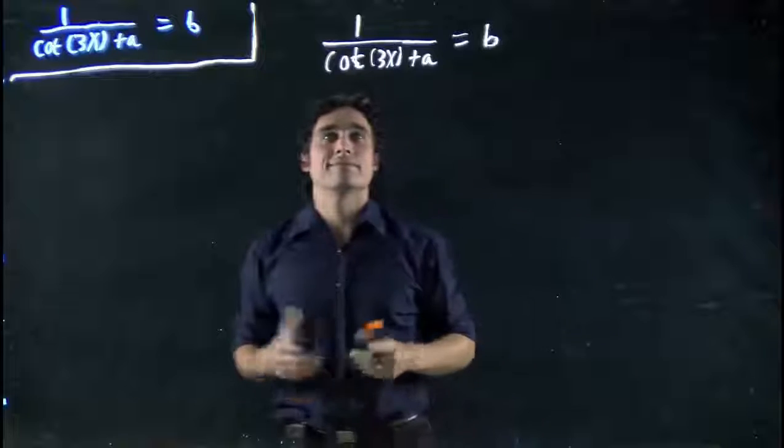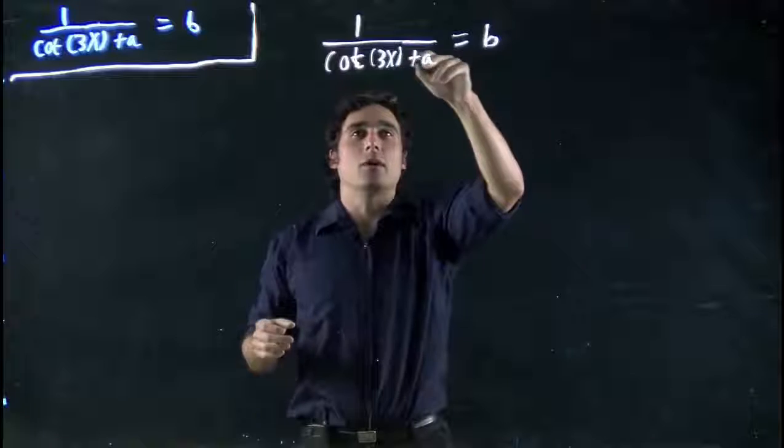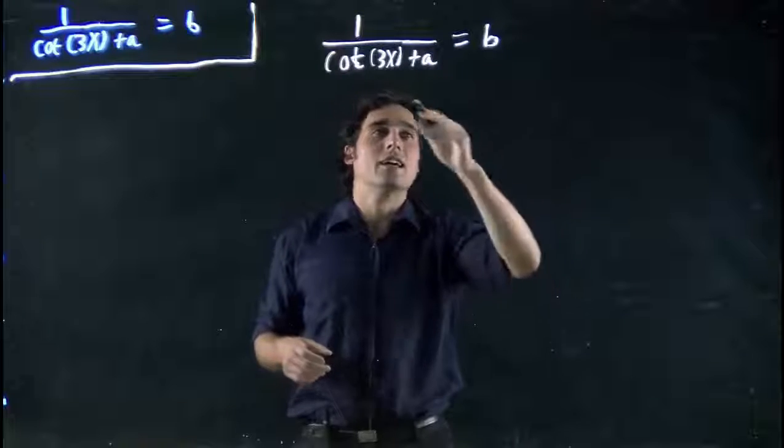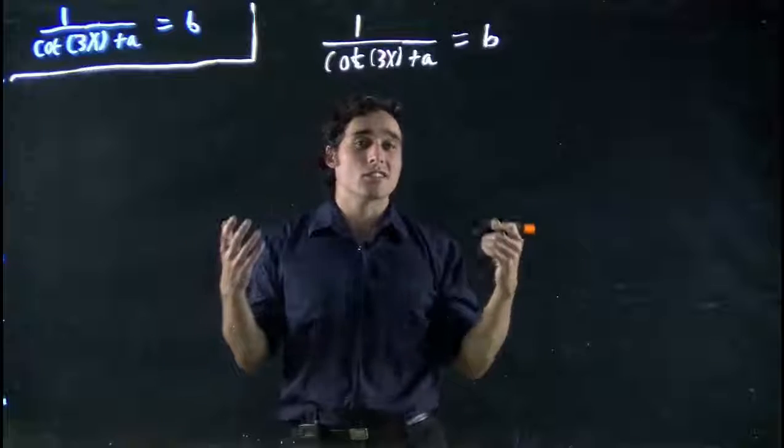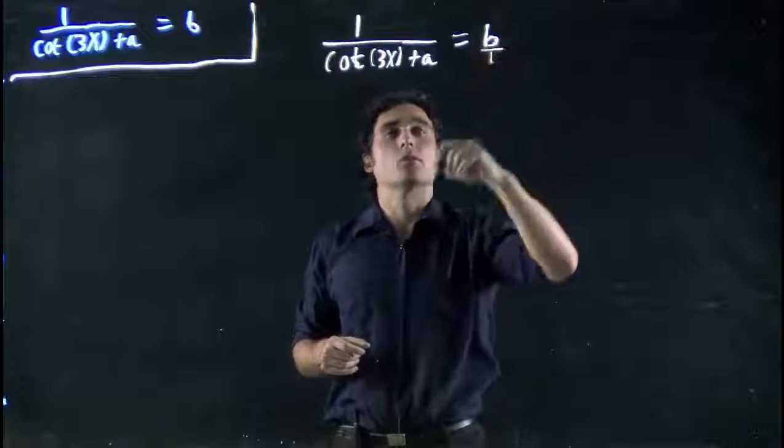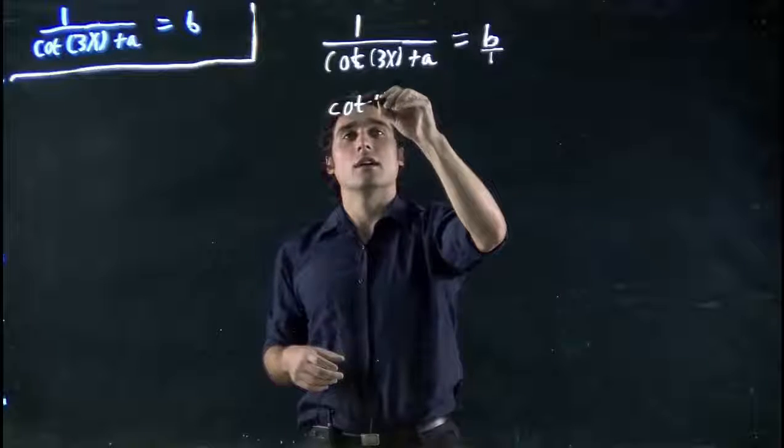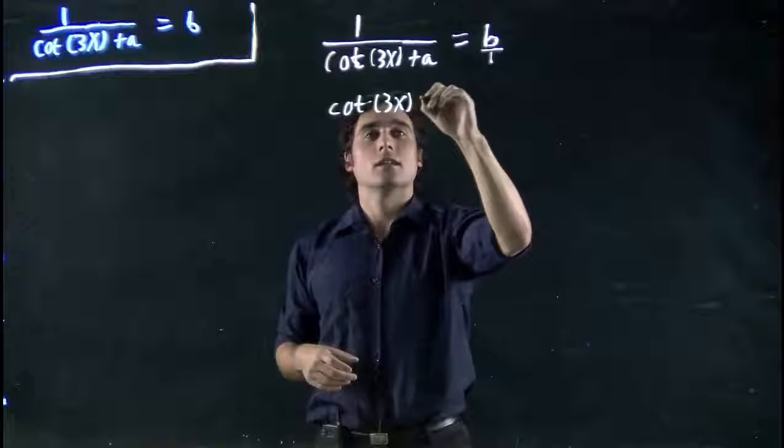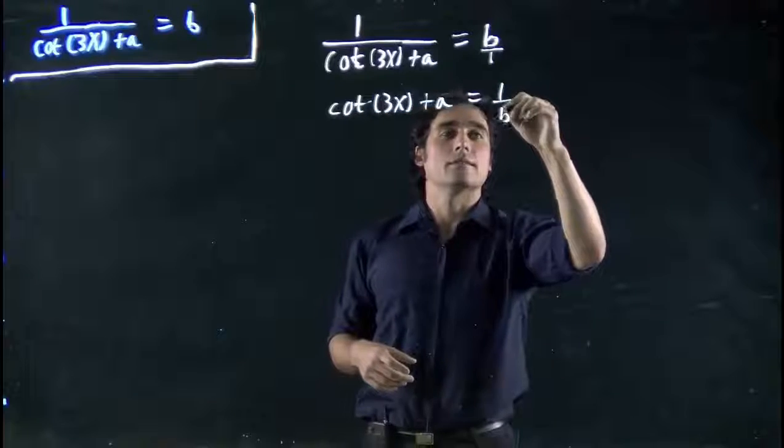Well, we don't want one over. If we wanted to, we can multiply both sides by this whole thing on the bottom, cotangent of 3x plus a, multiply both sides, but then we have to divide both sides by b. It's much easier just to flip both sides. We think of this as the same as b over 1. Flip both sides and get cotangent of 3x plus a equals 1 over b.